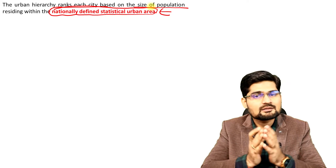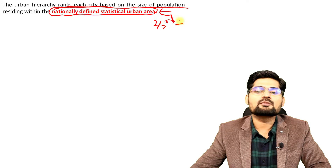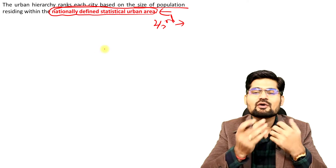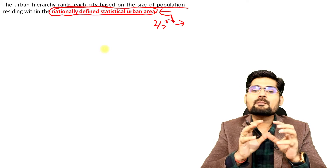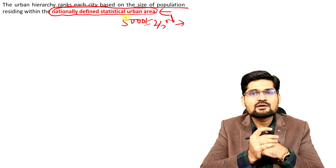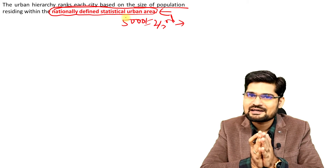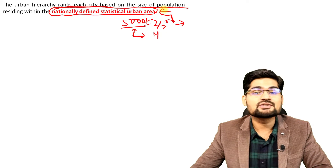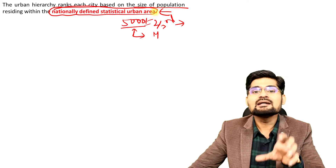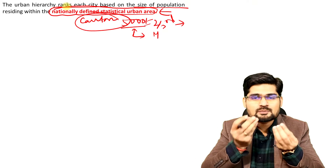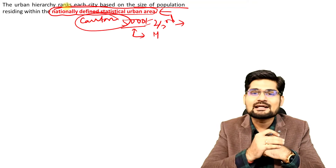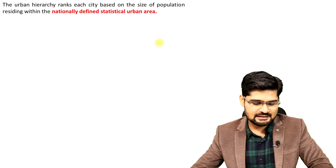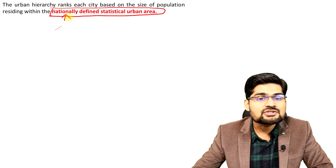In India, an urban area is defined as one where at least two-thirds of the population is involved in non-farm, non-agricultural, or non-primary activities — that is, secondary and tertiary activities. The population should be more than 5,000 people. Additionally, if there is a municipality or municipal corporation present, it is categorized as urban. Even smaller settlements with a cantonment area are classified as towns by the Census of India.